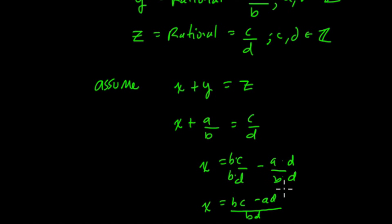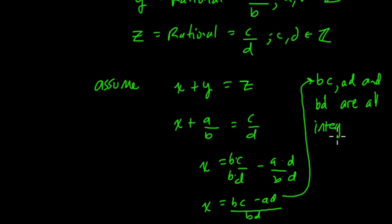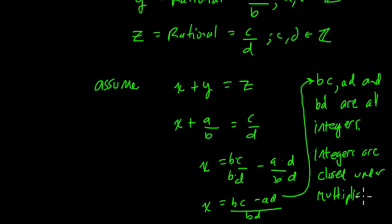Now, what's the problem with this? Well, we know, and you could write this out, that bc, ad, and bd are all integers. How do we know that? Because integers are closed under multiplication. What does that mean? That just means when you multiply two integers, you're guaranteed to get another integer. That's what closure under multiplication means. It means if you multiply integers, you get more integers. So if that's true, bc, ad, and bd are all integers.